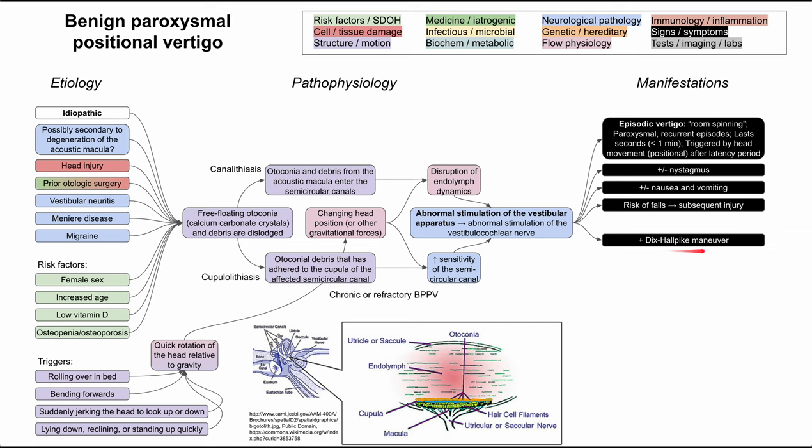On physical exam, the Dix-Hallpike maneuver can be used to diagnose BPPV. This is a maneuver where you lay the patient down on their back, have them open their eyes, and move their head in a specific direction intended to trigger the pathophysiology — to move the otoconia or to test if the semicircular canal is extra sensitive to endolymph movement. This is the Dix-Hallpike maneuver, and you may see it on board exams.